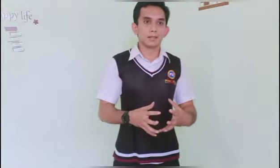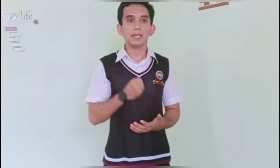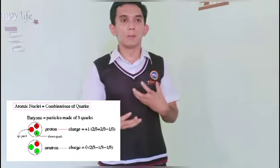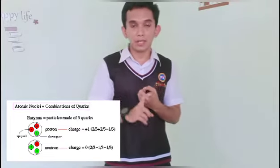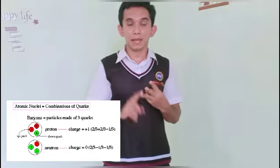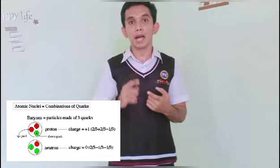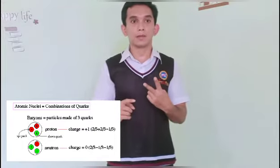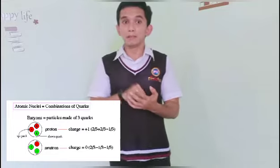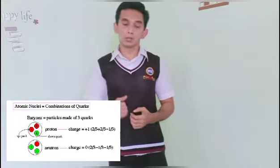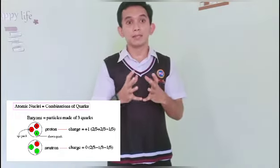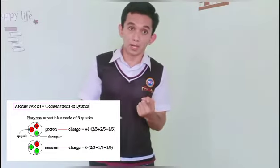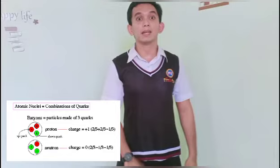Quarks combine to form the basic building blocks of matter. There are two kinds of these combinations: baryons and mesons. Baryons are combinations of three quarks, while mesons are combinations of only two quarks. The baryons, made up of three quarks, form protons and neutrons in the nucleus of an atom, while mesons, made up of only a pair of quarks, are usually found in cosmic rays.